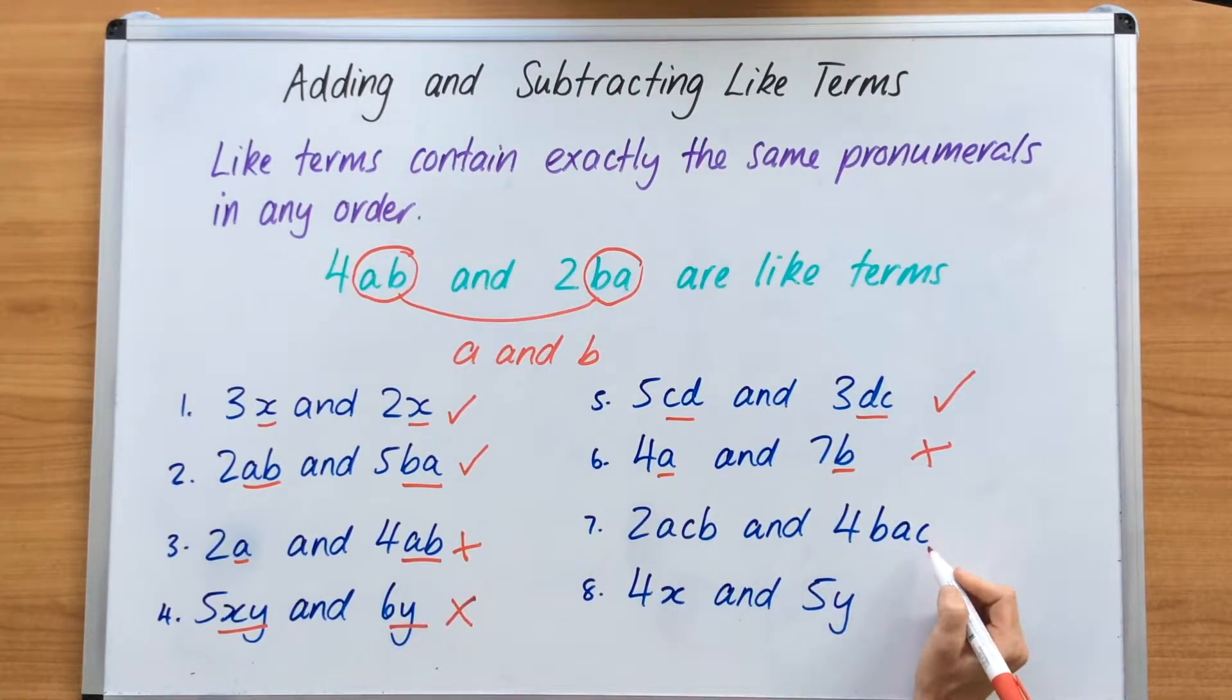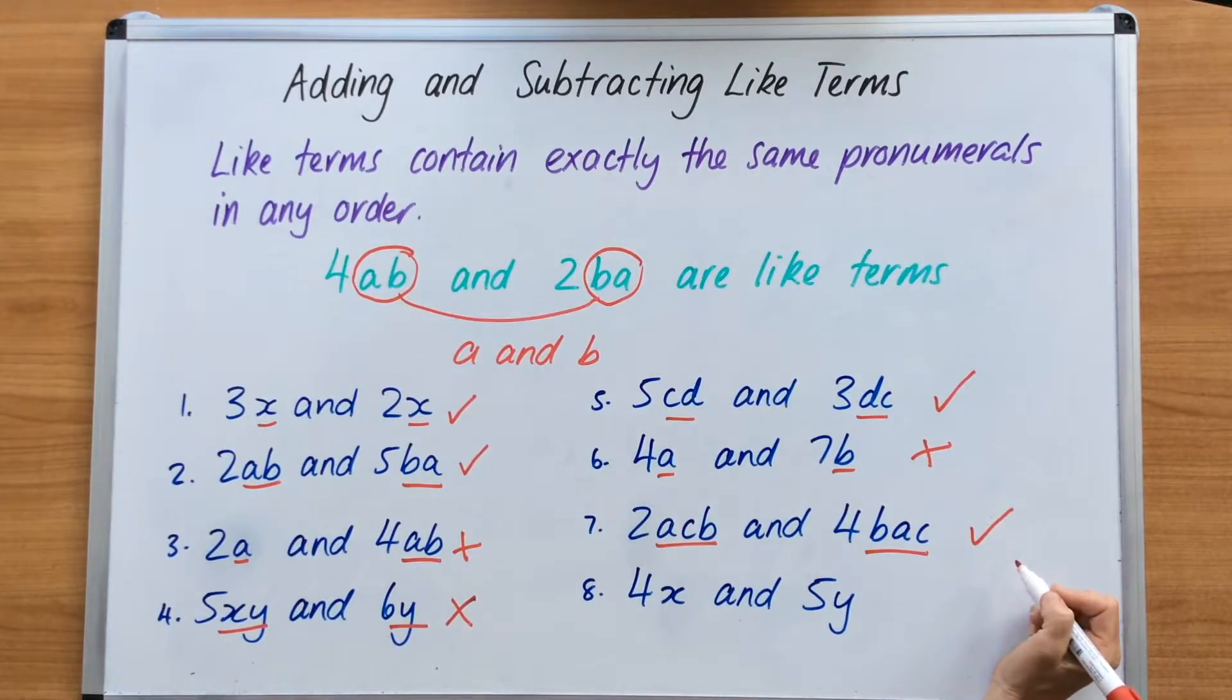2ACB and 4BAC. This is a like term. We've got the three letters on each side, the three sets of pronumerals. A, C, B and BAC. All we have here is the letters in a completely different order. But they do have an A, B and C in each part of these like terms. So yes, it is a like term. And the last one here is 4X and 5Y. Well, no, completely different. X and Y. There's no relationship. They cannot be like terms.